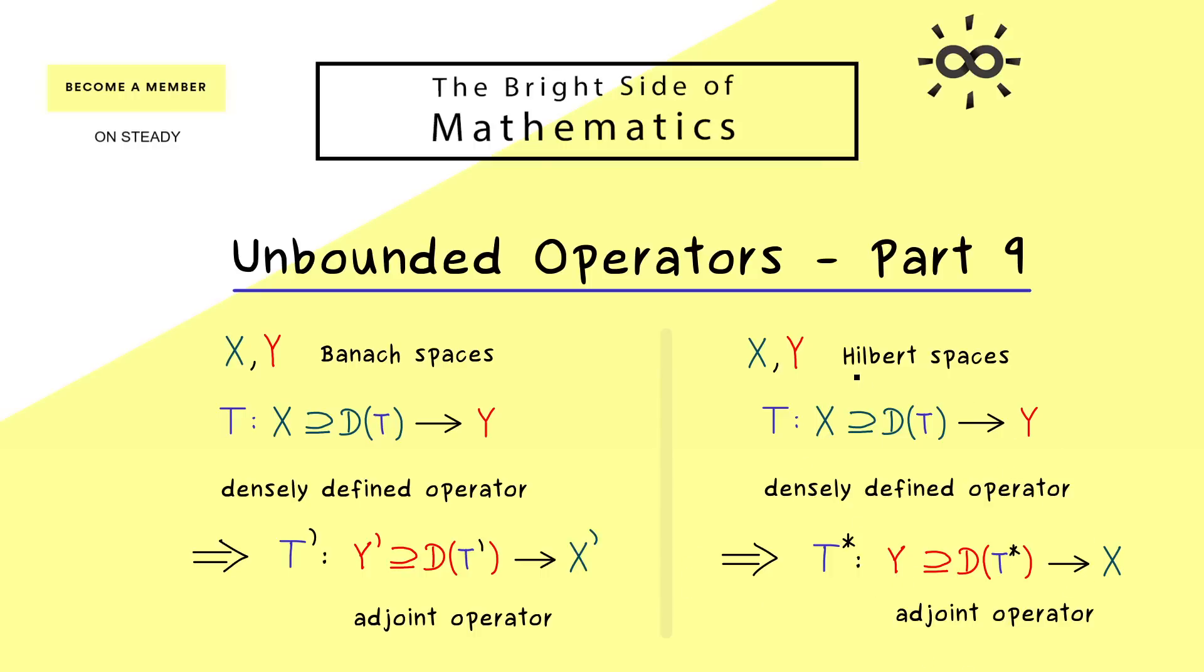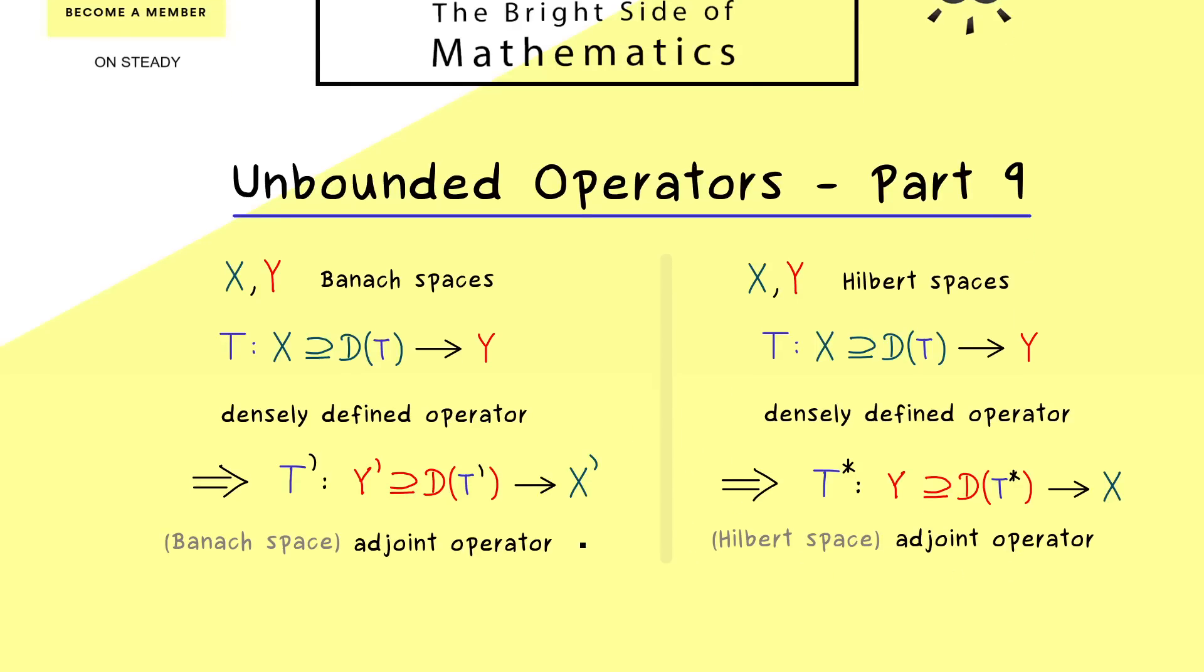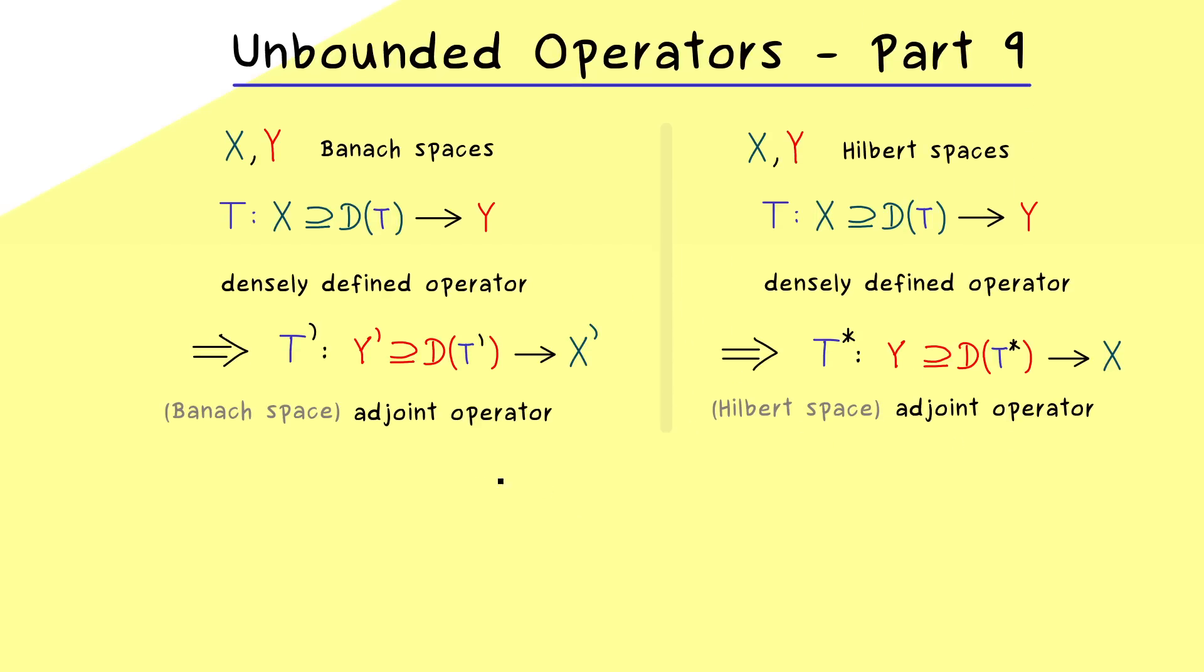However, since Hilbert spaces are just special Banach spaces, we actually have two adjoint operators for an operator between Hilbert spaces. This means if there is a danger of confusion, we would call the left-hand side the Banach space adjoint and the right-hand side the Hilbert space adjoint. But as we have learned in the last video, both adjoints are actually quite similar.